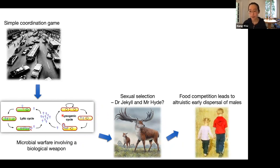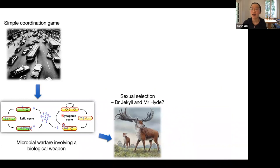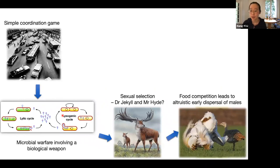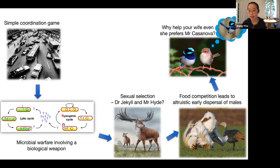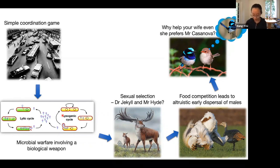We also considered a case where food competition can lead to the altruistic early dispersal of males — with the game happening between females and males, and between early- and late-dispersing individuals — and showed the example of the great bustard that follows this life history. Finally, we provided an example of the evolution of male help and female fidelity, and different alternative male strategies like care-providing males and sneakers, and their game interactions in the population.